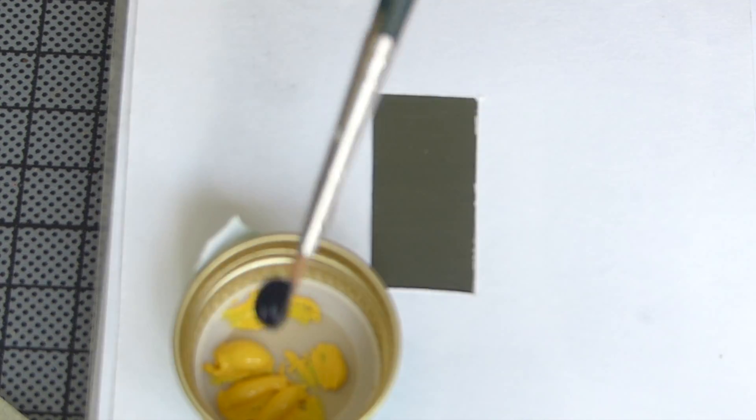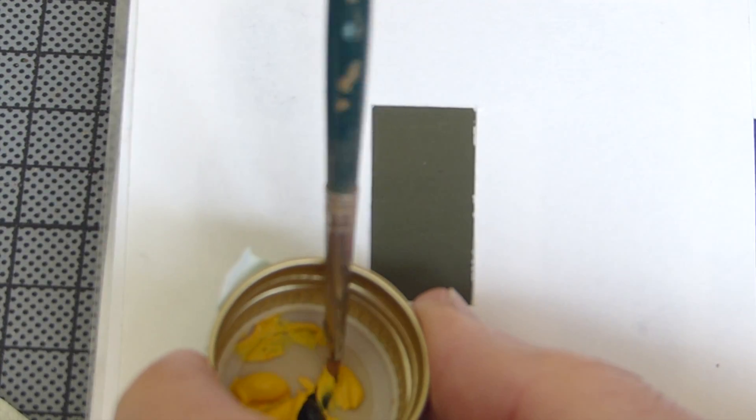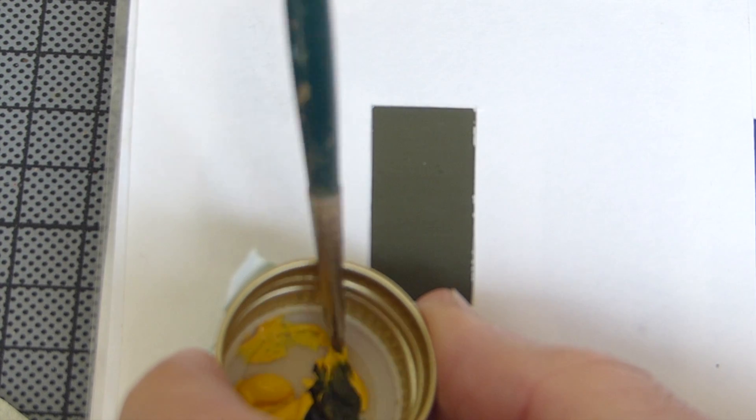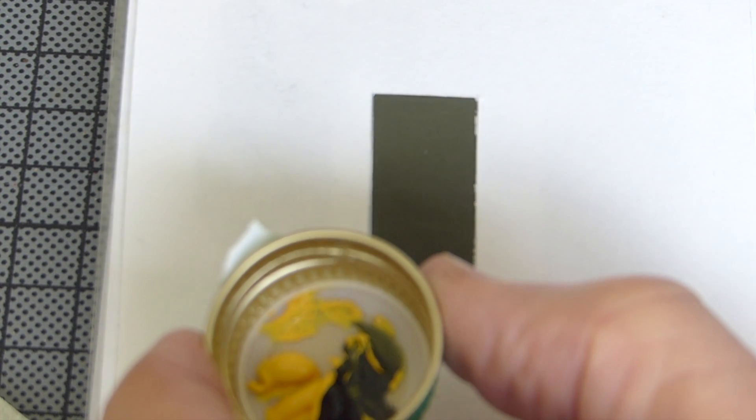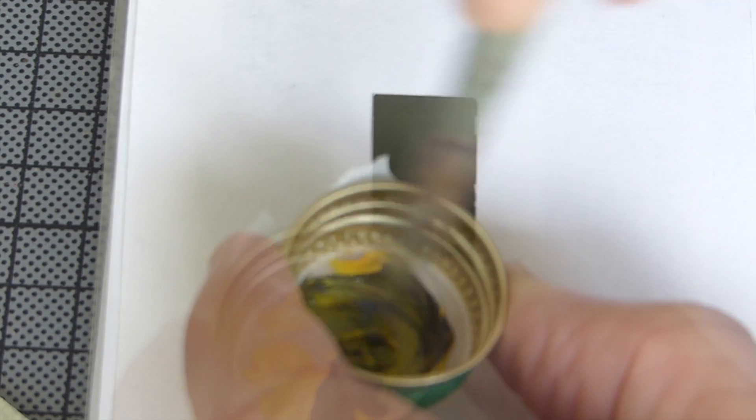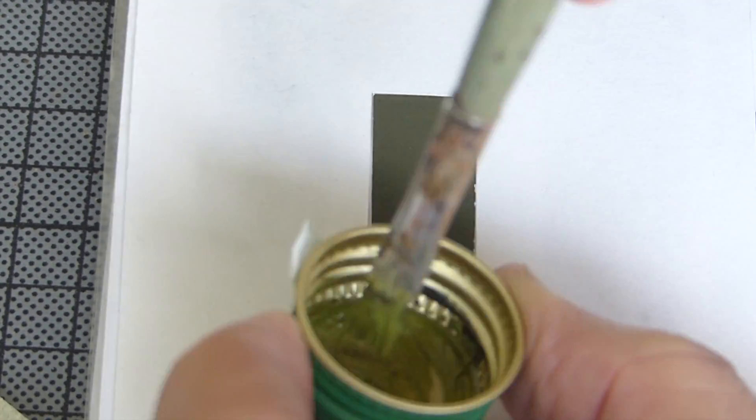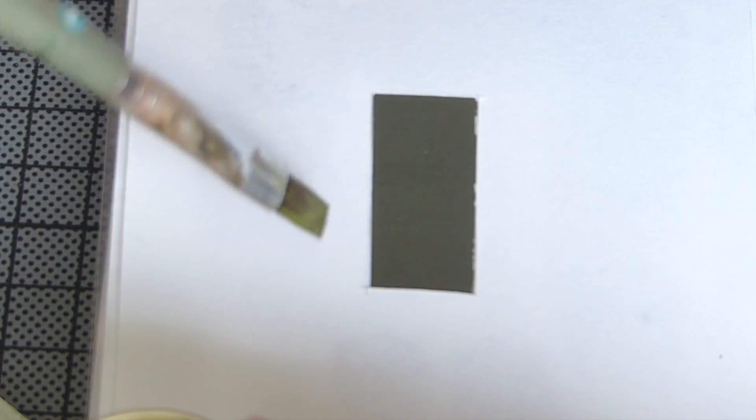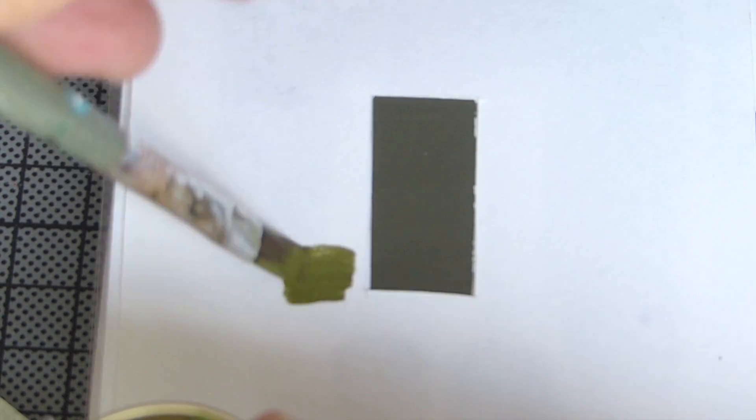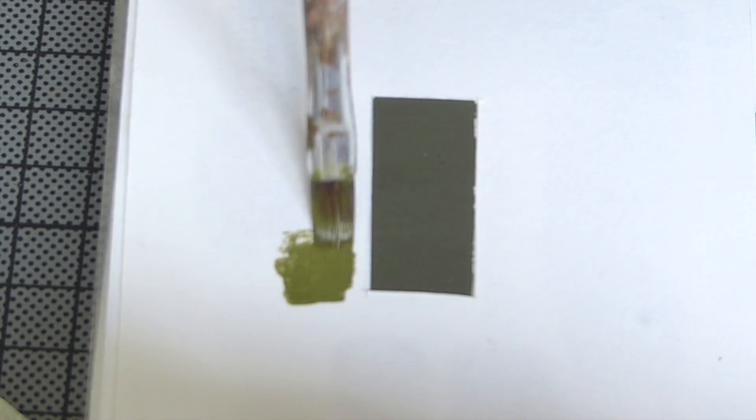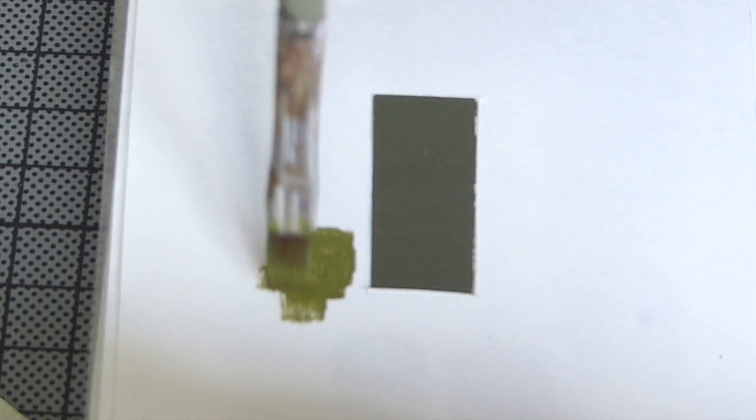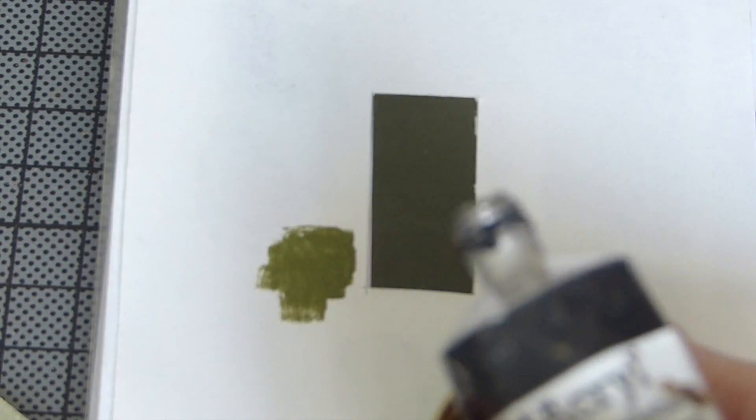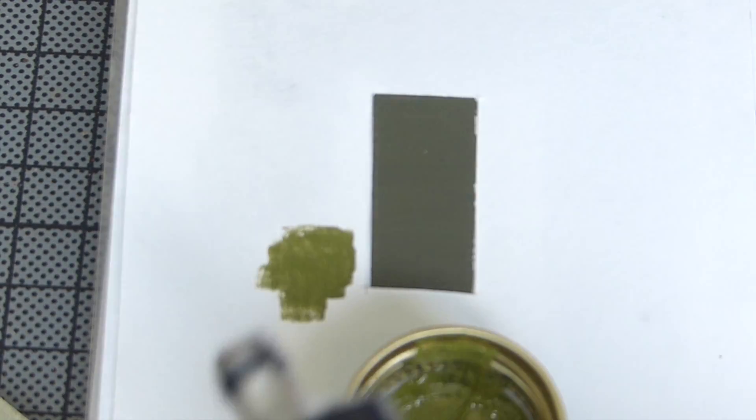We now add one part of Ivory Black to darken this color and also to cause a hue-shift, shifting the color from yellow to green. This olive green color looks very reminiscent of interior green and we will darken it further by adding one more part of Ivory Black.